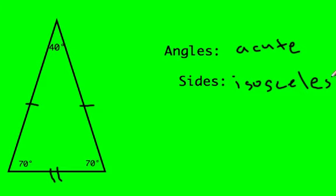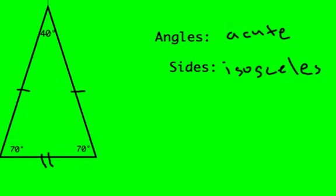You could actually have called the last triangle we had isosceles as well, since at least two sides were the same, that equilateral triangle. An isosceles triangle, or an equilateral triangle I should say will always be an isosceles triangle.